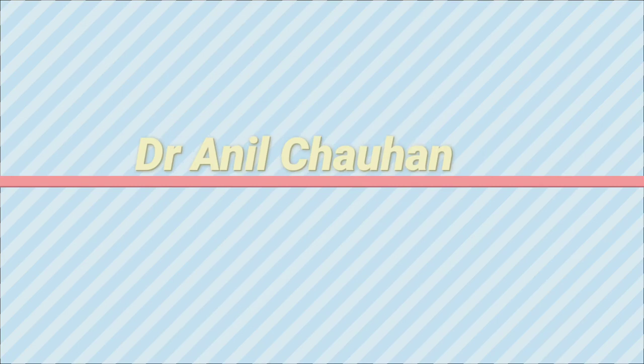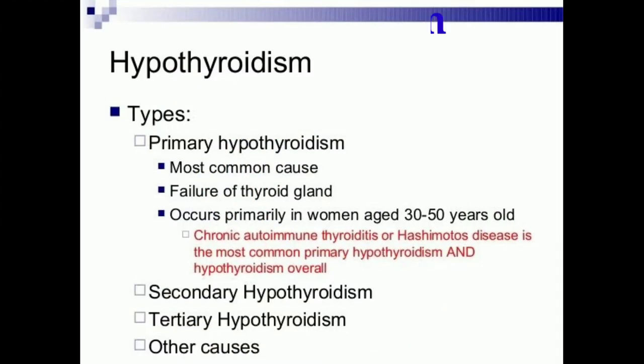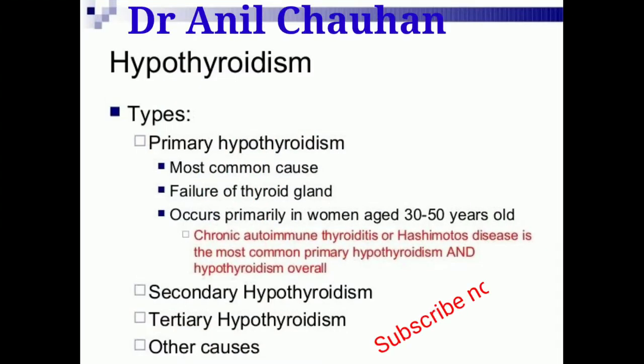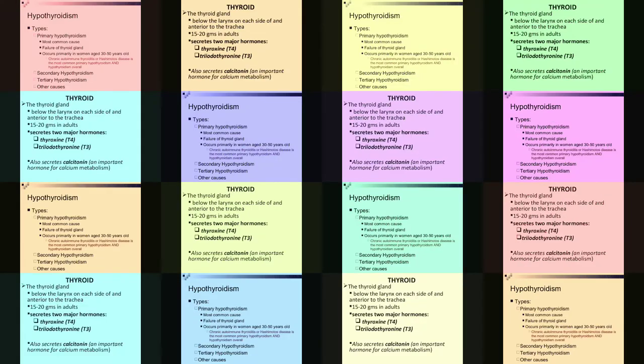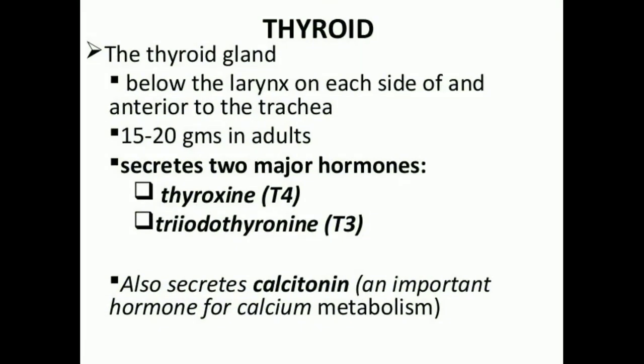What are the types of hypothyroidism? Primary hypothyroidism, secondary hypothyroidism, tertiary hypothyroidism, and other causes. In primary hypothyroidism, there is failure of the thyroid glands.